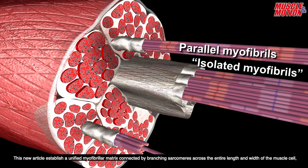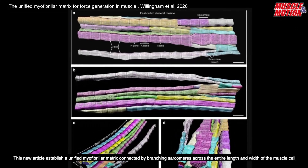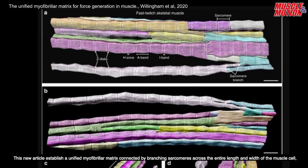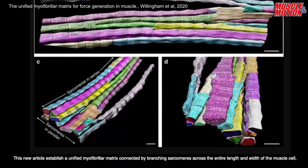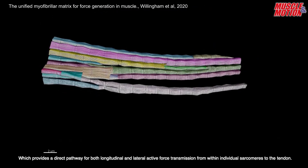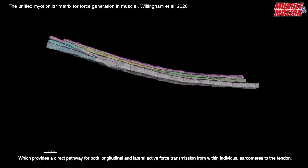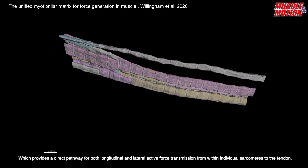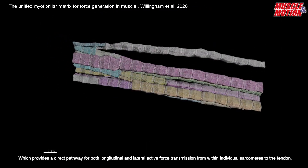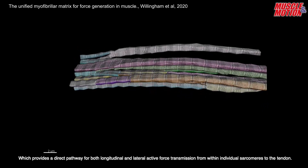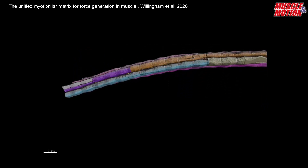This new article established a unified myofibrillar matrix connected by branching sarcomeres across the entire length and width of the muscle cell, which provides a direct pathway for both longitudinal and lateral active force transmission from within individual sarcomeres to the tendon.